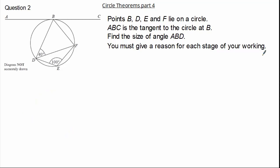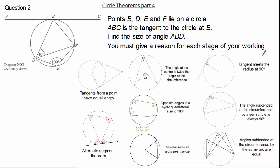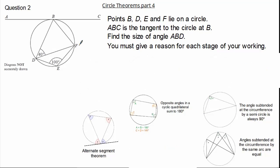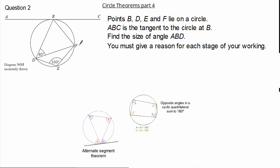So let's have a look at our circle theorems. We need to extract as much information as possible from our question and diagram to determine which circle theorems we can use. Here you can see that we do not have any radii, we do not have the diameter, we do not have any semicircles, nor do we have any angles subtended by the same arc.